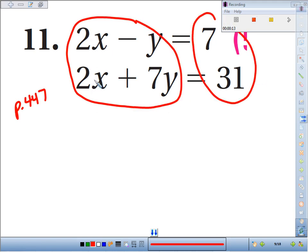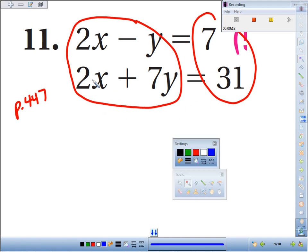The bummer is 2x doesn't cancel with 2x. Right now it would make 4x. So we use our little trick where we say multiply by negative 1, create an equivalent equation,